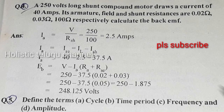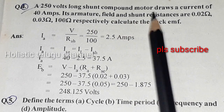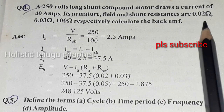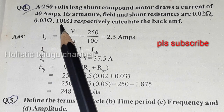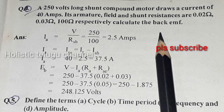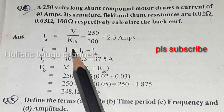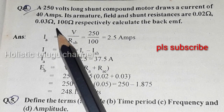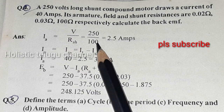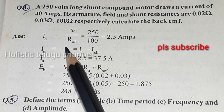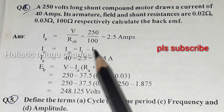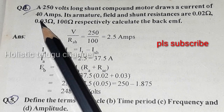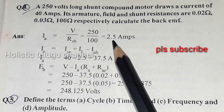Next question: a 250-volt long shunt compound motor draws a current of 40 amps. Armature, field, and shunt resistances are 0.02 ohms, 0.03 ohms, and 100 ohms respectively. Calculate the back EMF. Shunt current ISH equals V divided by RSH equals 250 divided by 100 equals 2.5 amps. Armature current IA equals IL minus ISH equals 40 minus 2.5 equals 37.5 amps.